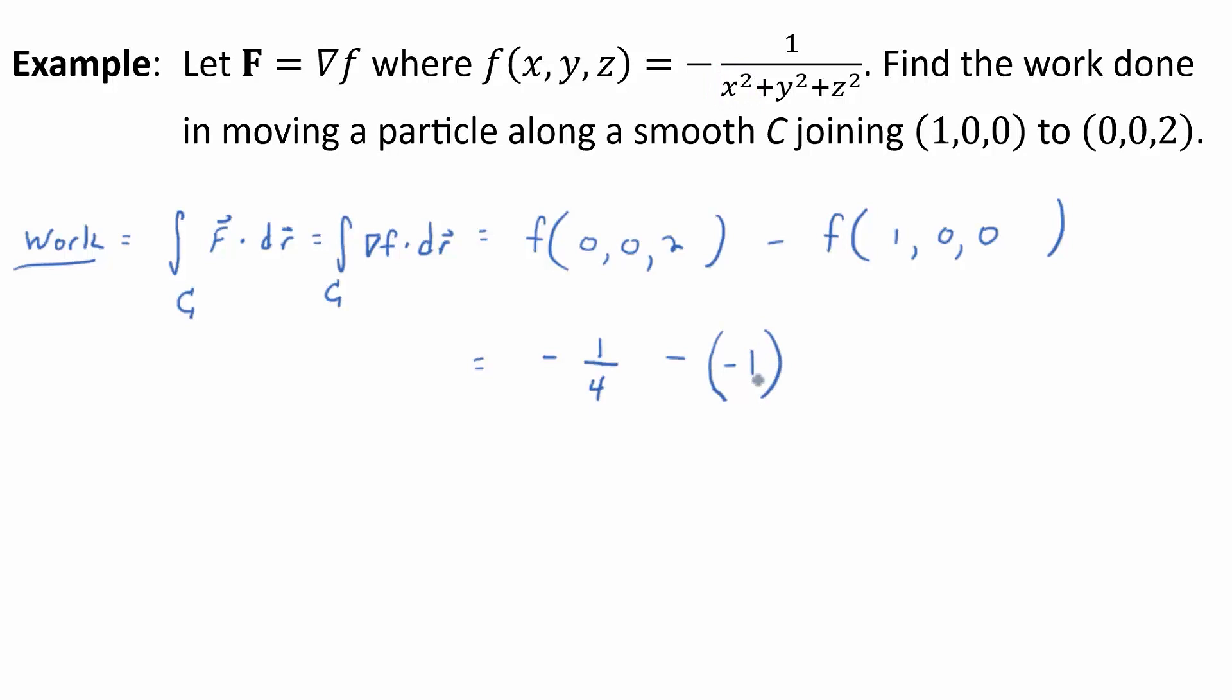Minus a minus 1. f of 1, 0, 0 is negative 1, but you're subtracting it off. Okay? So, what do you get, then? That becomes positive. You get negative 1 fourth plus 1. What do you get? Positive 3 fourths. Okay. So, you get 3 quarters.